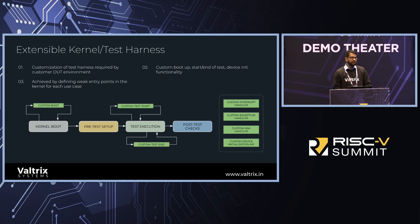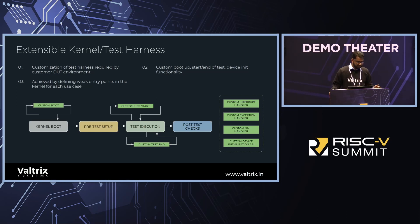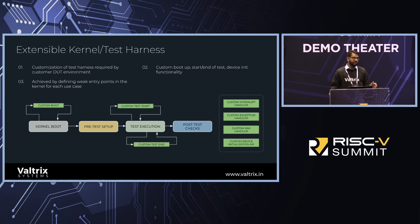Regarding extensibility, we have implemented weak functions in our boot sequence and test generator — like between test start and test end, where you want to randomize certain things for certain cycles but not all cycles. We have hooks placed in the design of the tool that can be used to achieve these custom behaviors. For example, you can install custom interrupt handlers or NMI handlers as part of the tool and achieve verification through that.